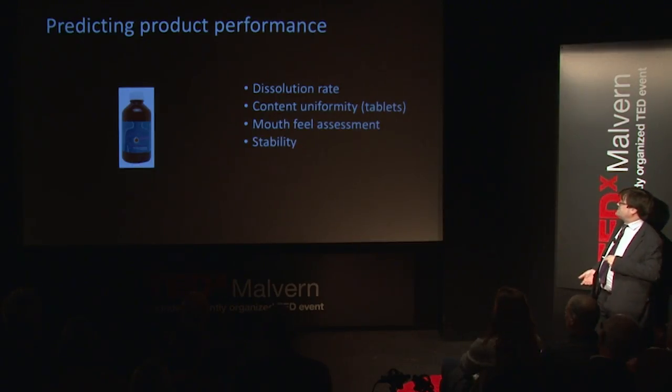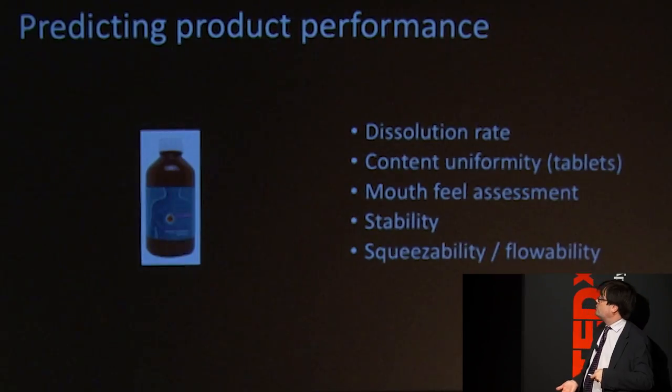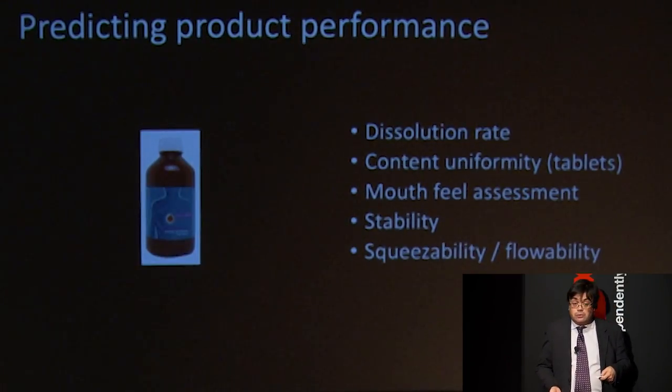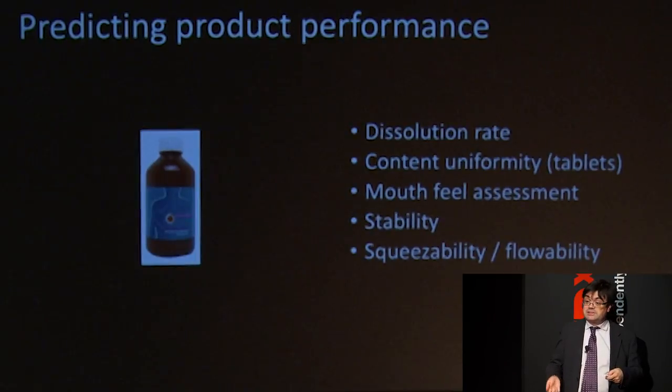Charge is also important for stability — otherwise you can get separation in medicines, which is why you still see "shake well before use" on bottles. The ingredients may have separated and need to be resuspended. The squeezability or flowability of something like ketchup depends on the particles within the suspension, and color is also size dependent.